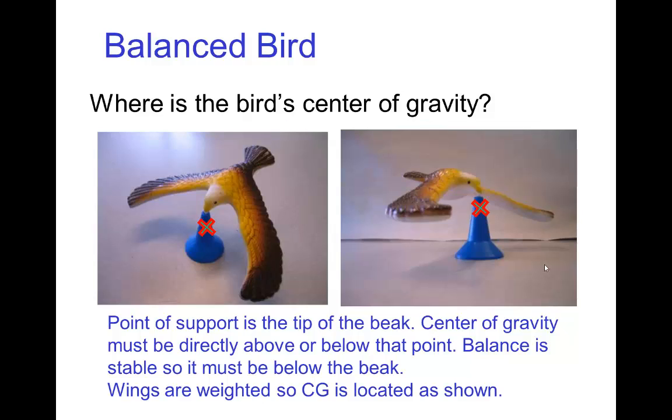So it must be located where that red X is marking. Now, how is that possible? Well, for this toy, it's light plastic except on the ends of the wings. The ends of the wings have lead coins inserted and that happens to put almost all the weight on the two wing tips and then the center of gravity is located at the X.